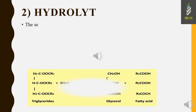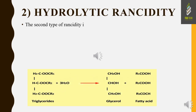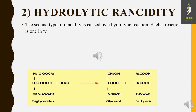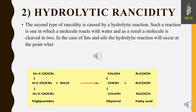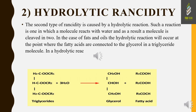The second type of rancidity is called hydrolytic rancidity. It is caused by a hydrolytic reaction, in which a molecule reacts with water and as a result a molecule is cleaved in two. In the case of fats and oils, the hydrolytic reaction will occur at the point where the fatty acids are connected to the glycerol in a triglyceride molecule. In a hydrolytic reaction, the fatty acid gets split off from the glycerol, forming a free fatty acid.